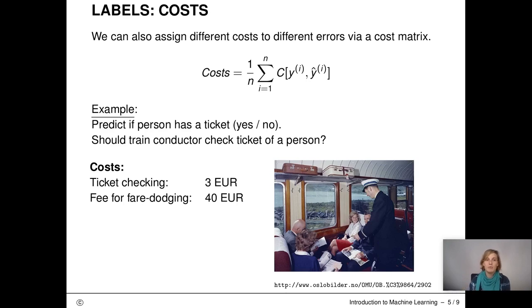If we know how much worse one error is compared to another, we can use costs. We specify each error and also each correct choice using a cost matrix. Let's try to understand this better using an example. Imagine you own a train company and you have to decide if your train conductor should check the ticket of a person.